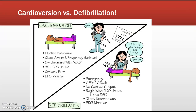Defibrillation is an emergency — the patient does not have a pulse. It does not matter where in the cycle the energy is delivered; we apply energy whenever the button is pushed. There is no cardiac output. Generally you start with 200 joules and go up to 360. The client is unconscious. You do not want to defibrillate someone who has a pulse — more often than not you will create a situation where they lose that pulse. Remember the sync button.